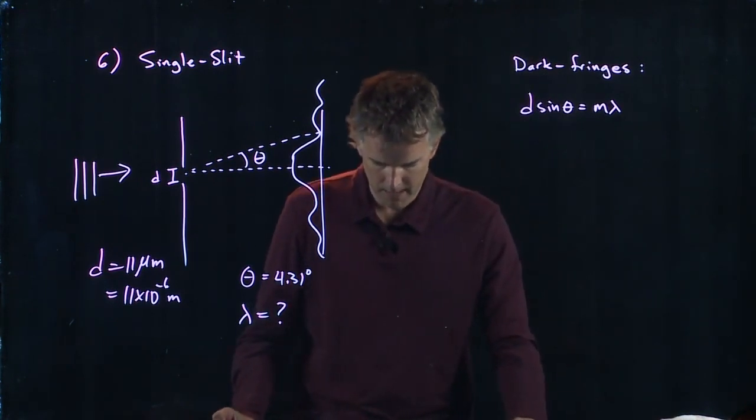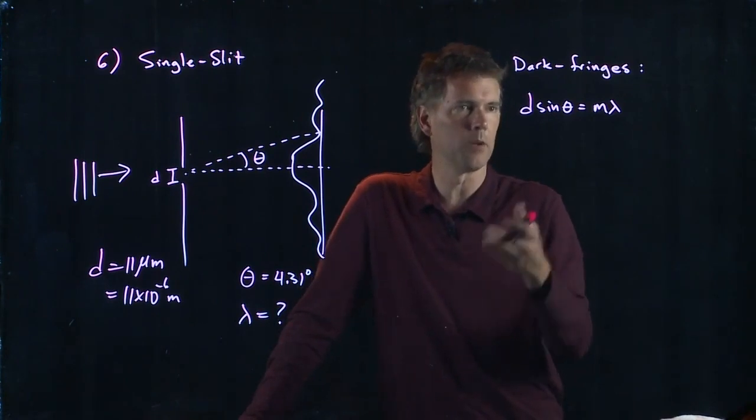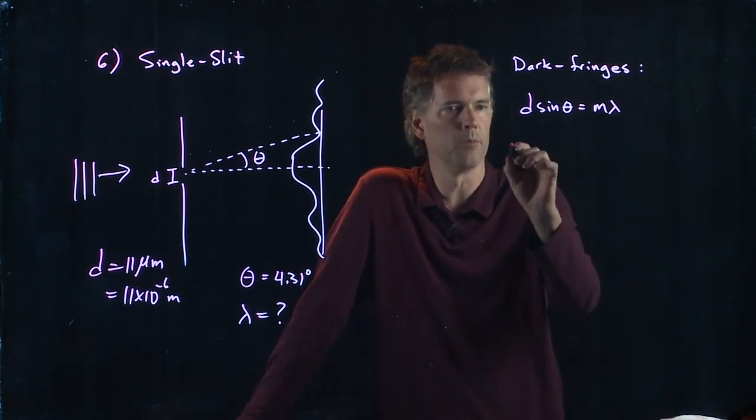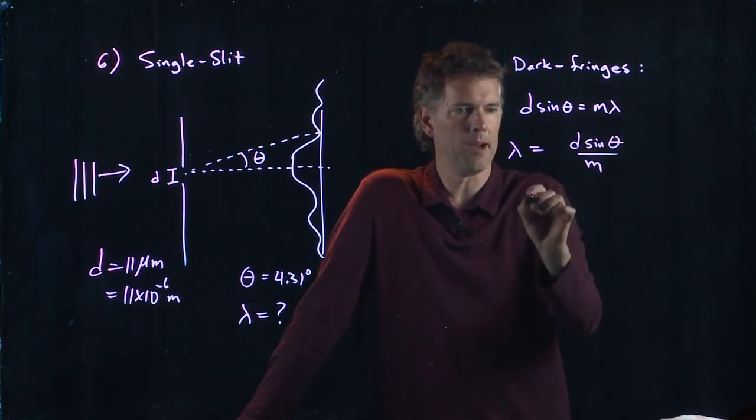So if we have that equation, then we might have everything we need, right? Because Jessica said, let's just solve this for lambda. That's what we're looking for. Lambda equals D sine theta divided by M.